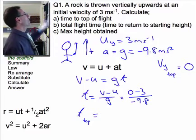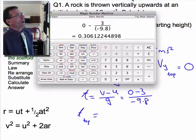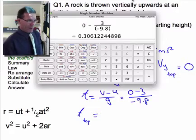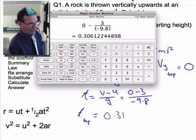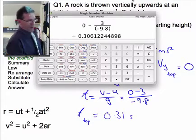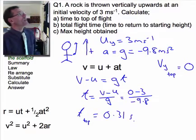And we can work out that is the time to the top of flight. Just always bear in mind what time it is you're talking about. Okay, and there's our calculation there. Zero minus three all divided by 9.8 gives us a time of around about 0.31 seconds. That is part a. We've found the time to the top of flight.